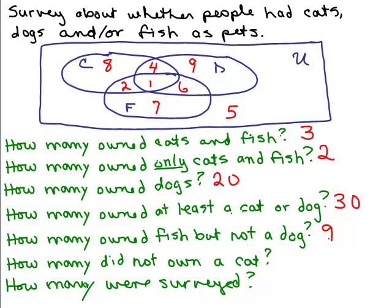How many did not own a cat? We look outside the cat circle — those are the people that did not own a cat, like the complement. There are four numbers outside the cat circle: 7, 6, 9, and 5. Adding those: 9 and 5 is 14, plus 6 is 20, plus 7. So I got 27.